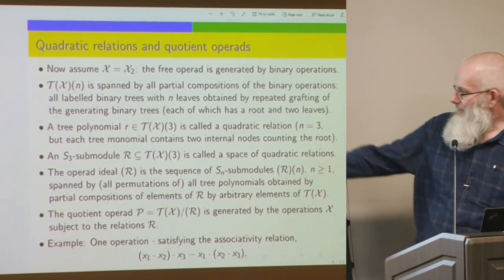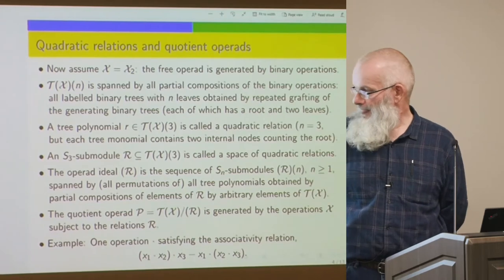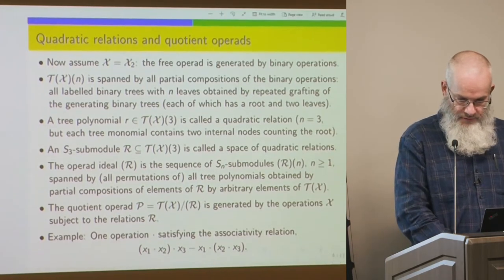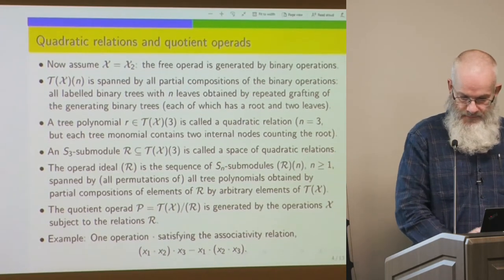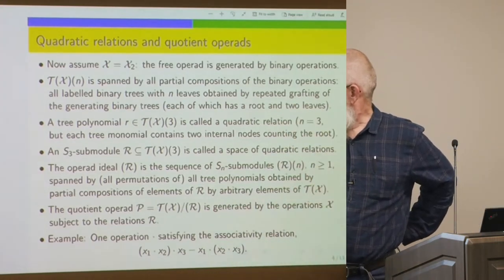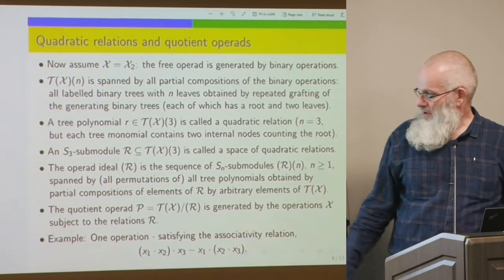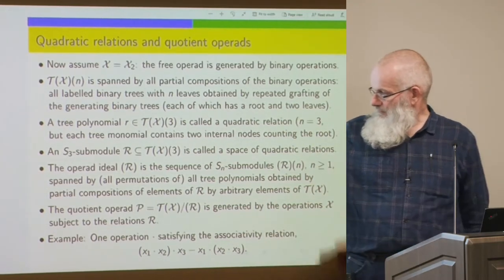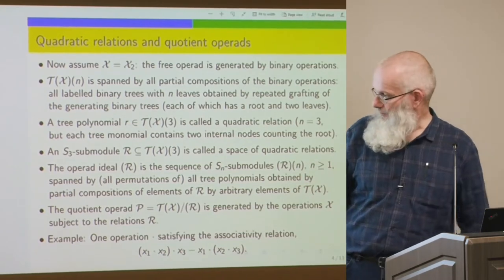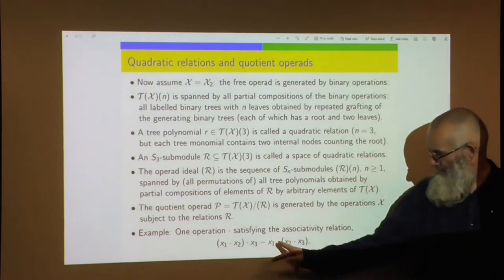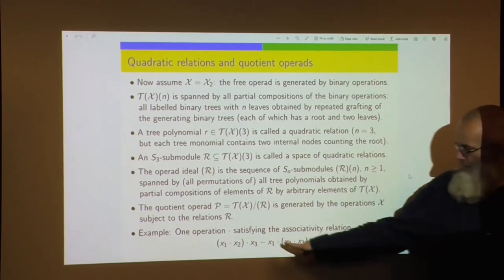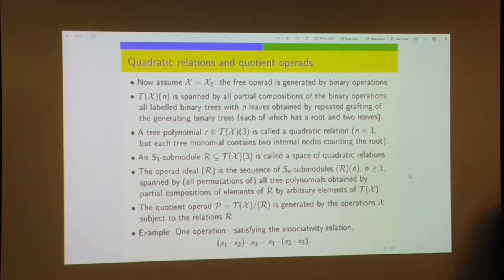Given a space of relations, we can generate the operad ideal — the sequence of S_n modules obtained by taking all linear combinations of all permutations of tree polynomials from partial compositions of the generating set by arbitrary elements of T(X). That's like the closure condition for ideals in ring theory. We then have a natural notion of quotient operad, and a simple familiar example is one operation satisfying the associativity relation.